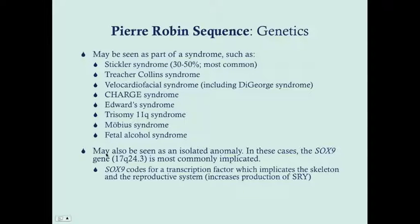Pierre Robin sequence may also be seen as an isolated anomaly, and in these cases you're going to look for an issue with a gene called SOX9, which is on the long arm of chromosome 17. SOX9 has a couple of really different functions — it implicates the skeleton, which is probably what leads to Pierre Robin sequence when mutated, but it also codes for some functions of the reproductive system and increases production of SRY, the gene on the Y chromosome.